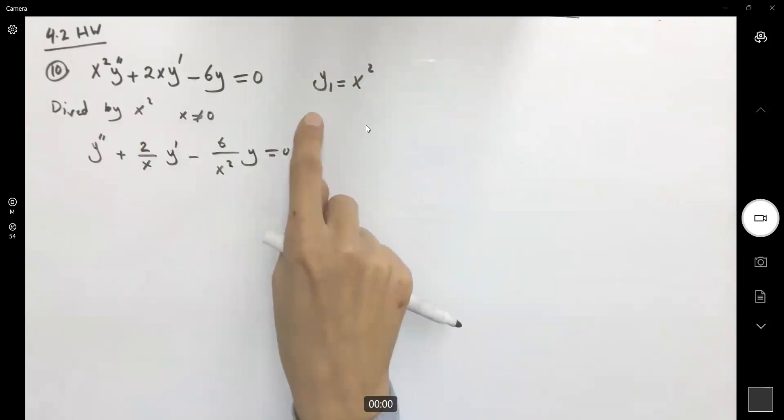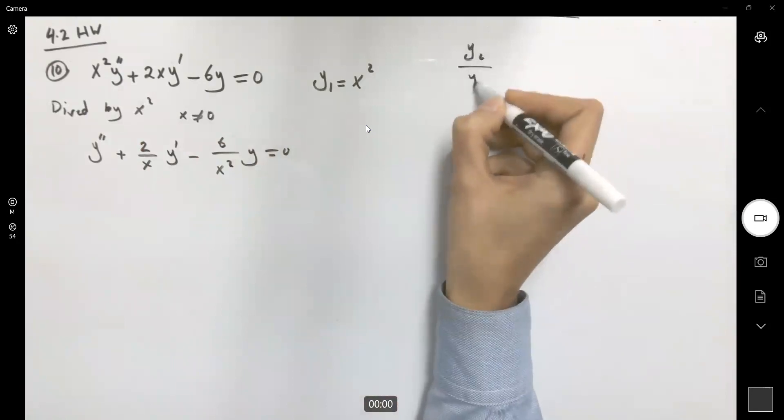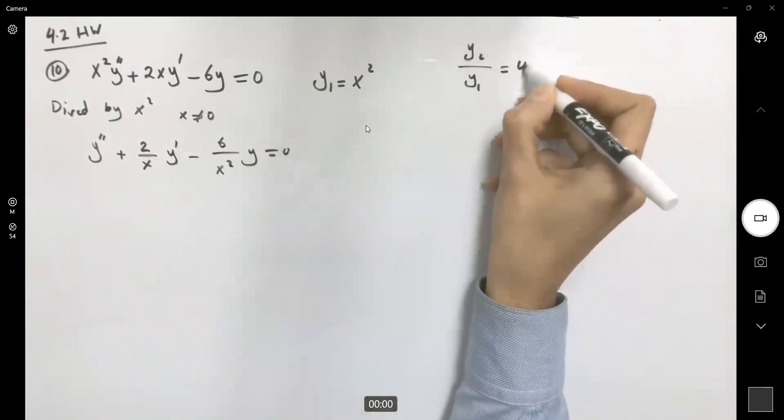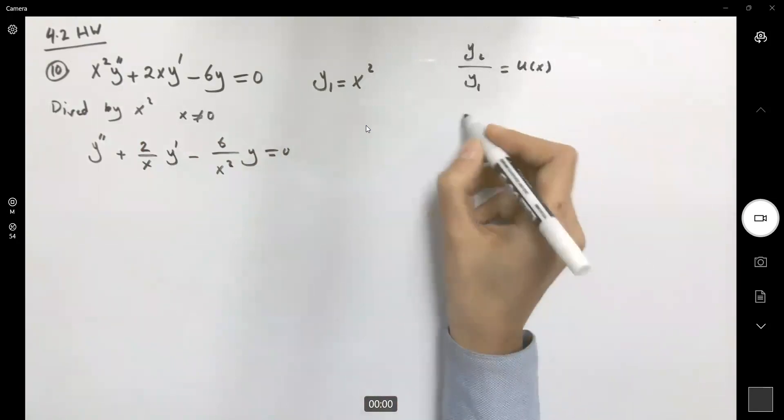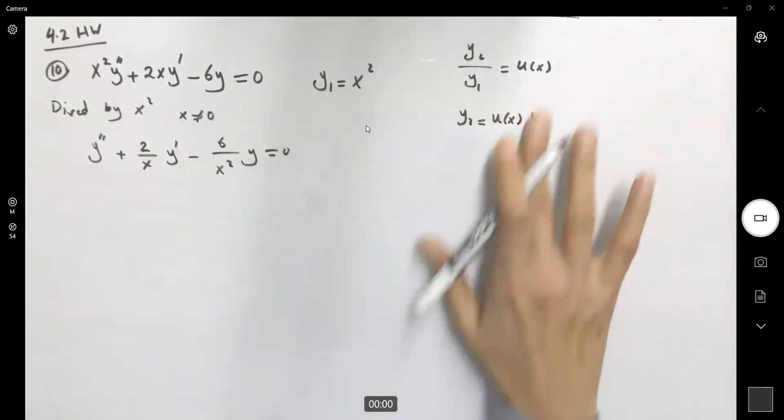We have to apply the reduction of order to find the second solution for this differential equation. So what are we going to do? We know that y2 divided by y1 is equal to a function like u. So y2 is equal to u times y1 of x, which is just x squared.